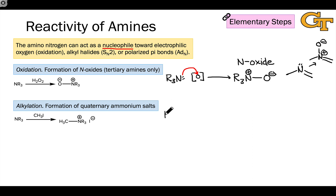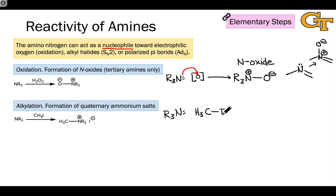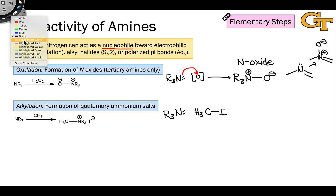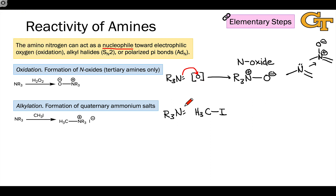Alkylation of neutral amines is absolutely key, and this generally occurs through an SN2 process. The amino nitrogen and its lone pair are great nucleophiles for SN2 reactions. For example, in the presence of a nice electrophile like methyl iodide, where carbon is linked to a good leaving group, we can observe SN2 reactivity. This is a nice way to make nitrogen–carbon bonds.